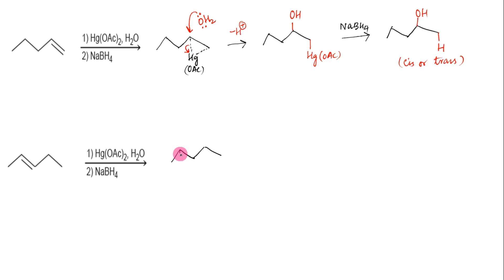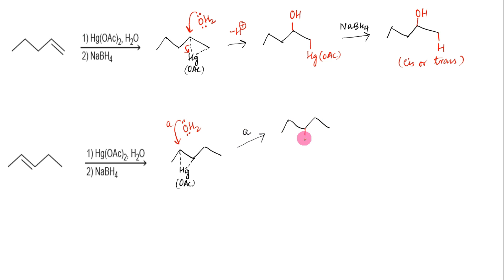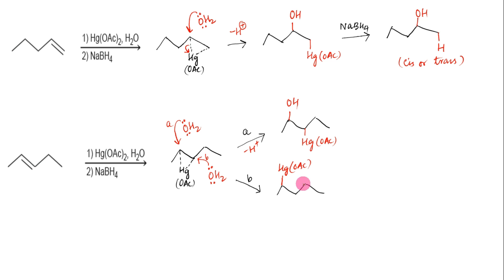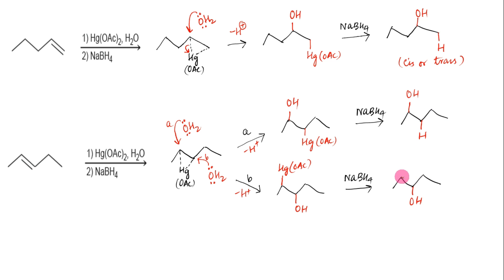In the same way, consider oxymercuration of 2-pentene. Again the first step is formation of the mercurinium ion. The second step is opening of this mercurinium ion on the more substituted end. But in this case the three-membered mercurinium ion is substituted by one alkyl group on both ends. Therefore water can open this mercurinium ion on either side to form two intermediates, each of which is then demercurated by NaBH4 to form products. Thus oxymercuration-demercuration of 2-pentene gives two products which are positional isomers.